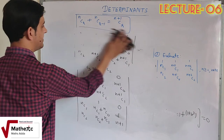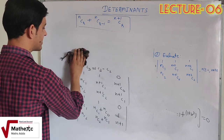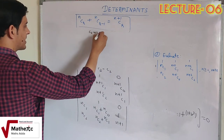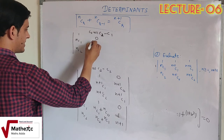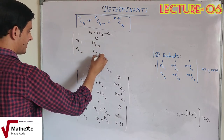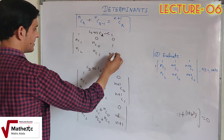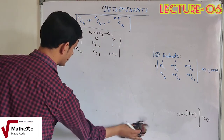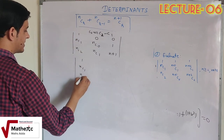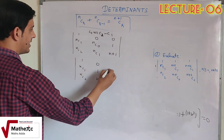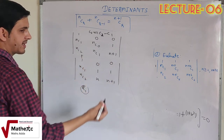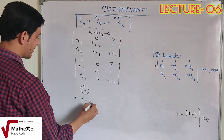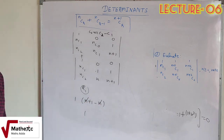C2 = C2 − C1 apply करने पर matrix बनती है: [1, nC1, nC2 / 0, nC0, nC1 / 0, 1, n+1]. nC0 = 1 रखने पर: [1, nC1, nC2 / 0, 1, n / 0, 0, 1]. R1 के respect में expand करने पर: 1 × (1×1 − n×0) = 1. इसलिए इस determinant की value 1 आती है।